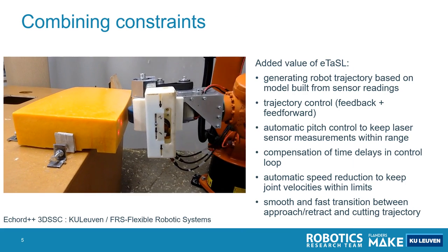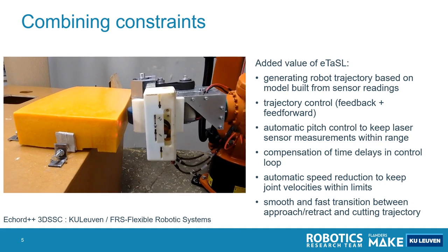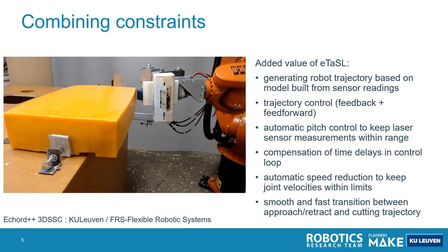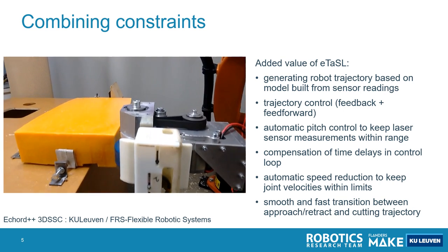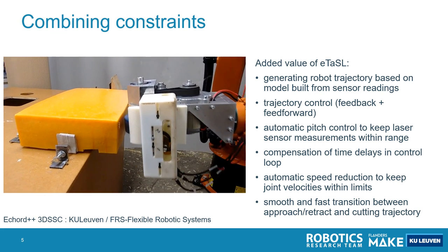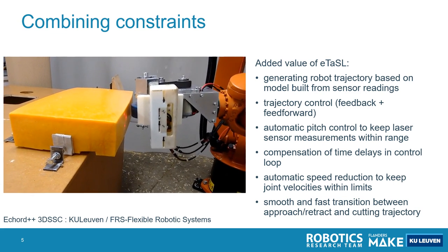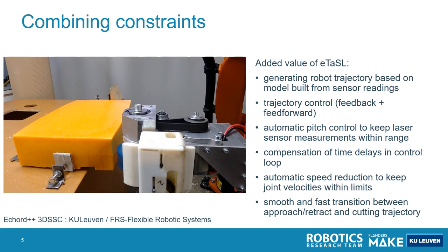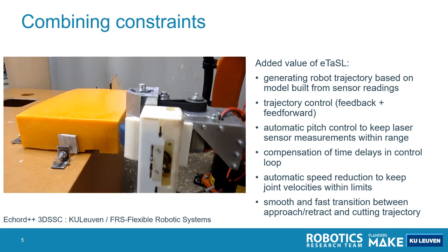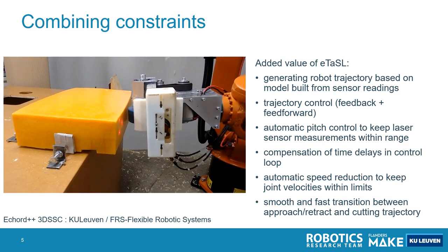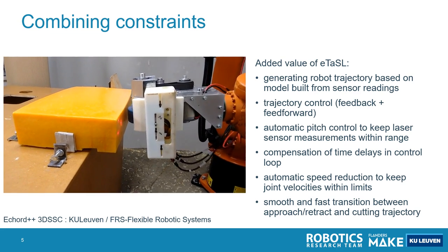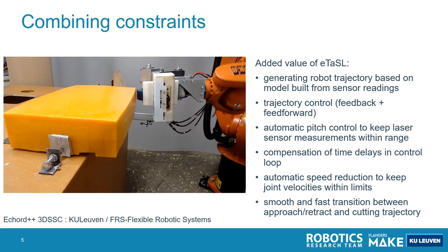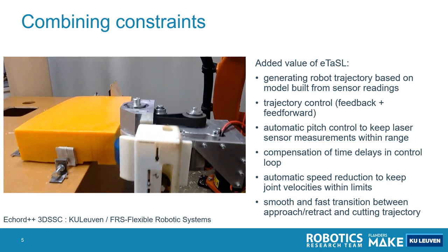The cheese decrusting application had many more constraints. It runs through the surface, measures points on the surface, and models the surface. There is a constraint imposing the position of the robot on this trajectory, while another constraint maintains the pitch of the robot so that the laser sensors always remain in range, while still allowing some flexibility in case of joint velocity limits or other environmental constraints. This approach also allows for automatic compensation of time delays in the control loop, because the laser sensors are looking ahead.